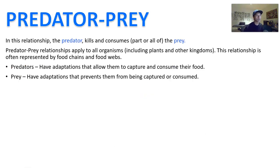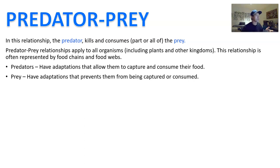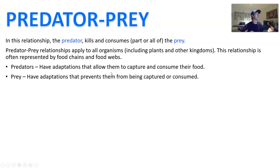Let's start with predator and prey because that's the most commonly known relationship. In this relationship, the predator usually kills and consumes either all or part of the prey. Predator-prey relationships apply to all organisms, including plants — even though we don't usually say the cow is the predator of the grass, it is referring to predation in the process. This relationship is often represented by food chains and food webs. Generally speaking, predators will have adaptations that help them capture food, and prey will have adaptations that prevent that from happening.